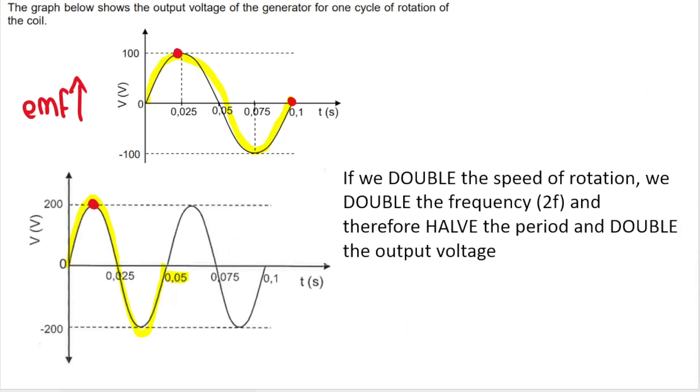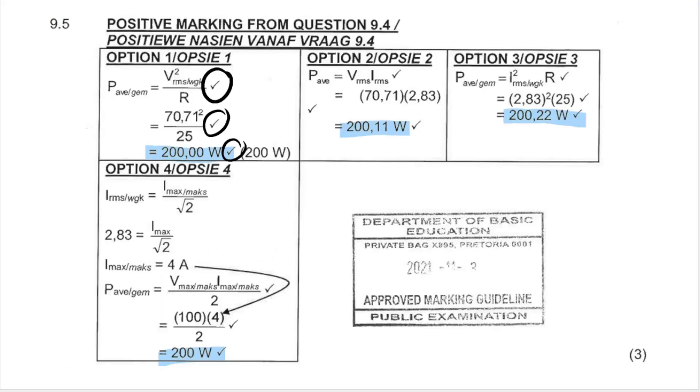This is quite a difficult question. So you need to remember that if you change the speed of rotation, not only are you changing the period of the graph, okay, how long it takes for one rotation to be complete, but you're also changing the maximum voltage because of Faraday's law. I hope that that was helpful. I'll see you again in another video very soon. Bye everyone.